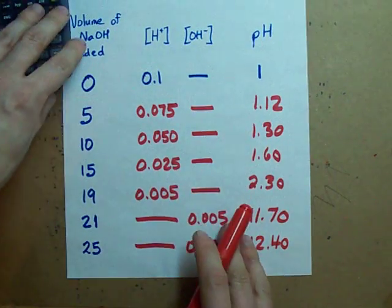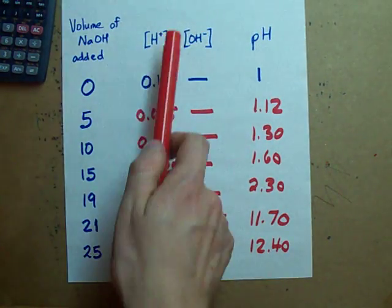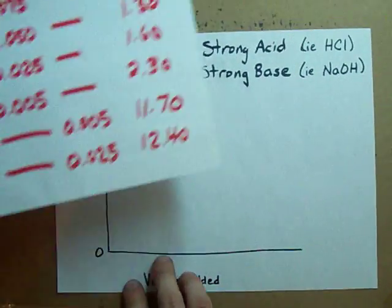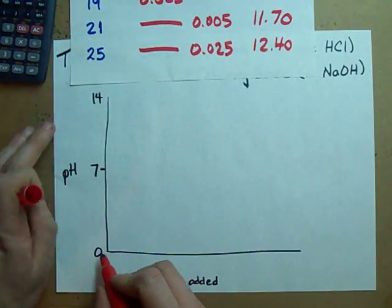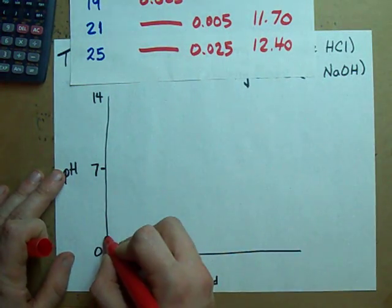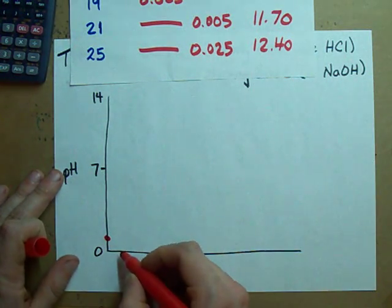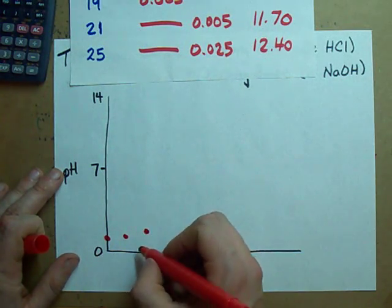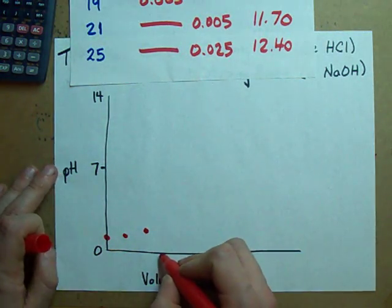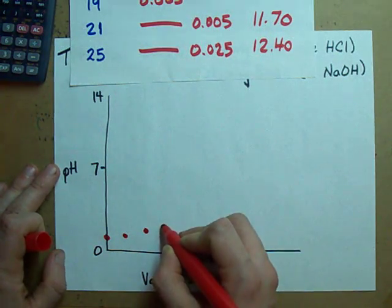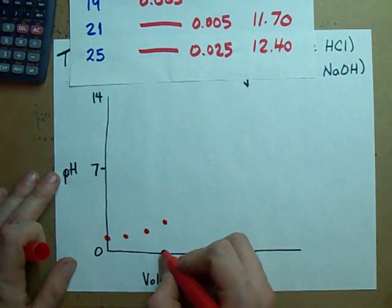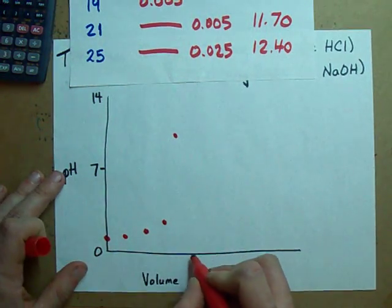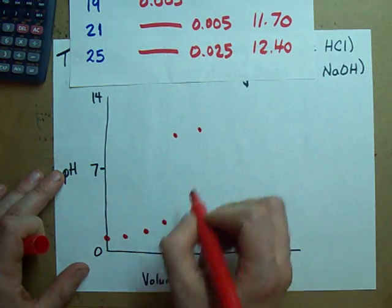These are the pHs as I titrate a strong acid with a strong base. Let me just plot these for you on a graph. When I added 0 milliliters, my pH was 1. When I added 5 milliliters, my pH was 1.12. When I added 10 milliliters, my pH was 1.3. When I added 19 milliliters, my pH was 2.3. When I added 21 milliliters, my pH jumped up to 11.7. When I added 25 milliliters, my pH was 12.4.